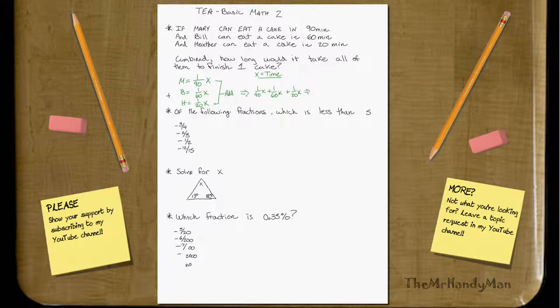So that will equal 2 over 180X plus 3 over 180X plus, and this one will be 6 over 180X. So that total is going to equal 11 over 180X.